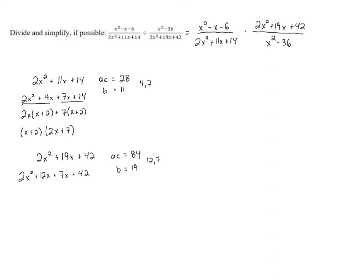And now that we have four terms, we can finish by grouping. In the first group, both of those terms have a 2x, so we can pull out a 2x, and that leaves us with x plus 6. In the second group, they're both divisible by 7, so we can pull out a 7. That also leaves us with x plus 6.